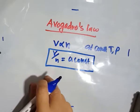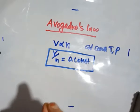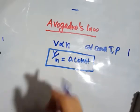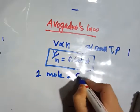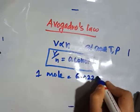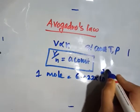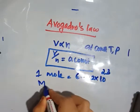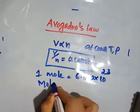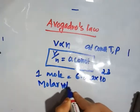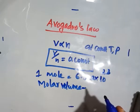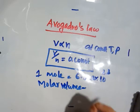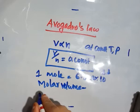If you have 1 mole of gas, 1 mole is equal to 6.022 into 10 raise to 23. Then, what is molar volume? The molar volume is the volume occupied by 1 mole of any gas, in standard conditions.